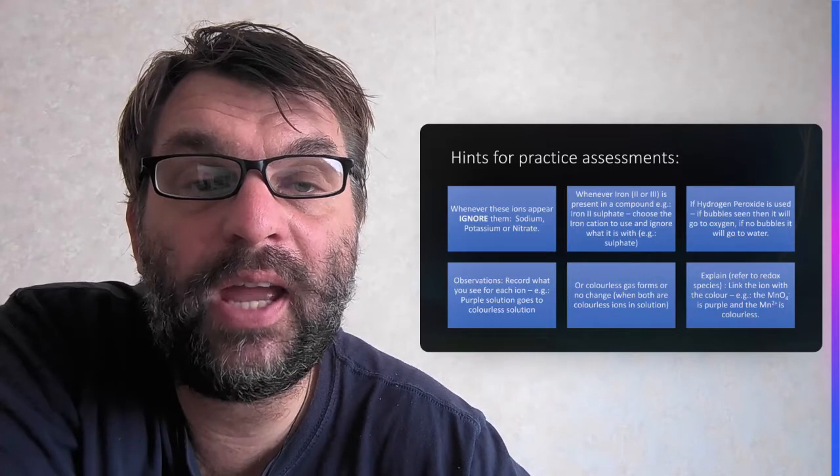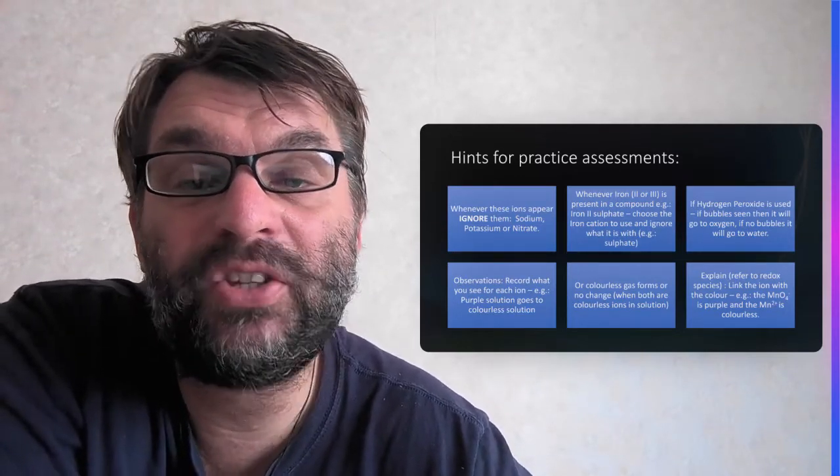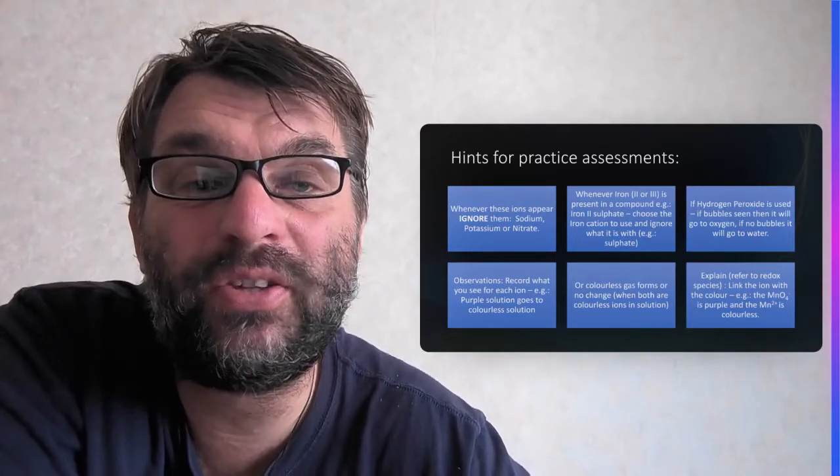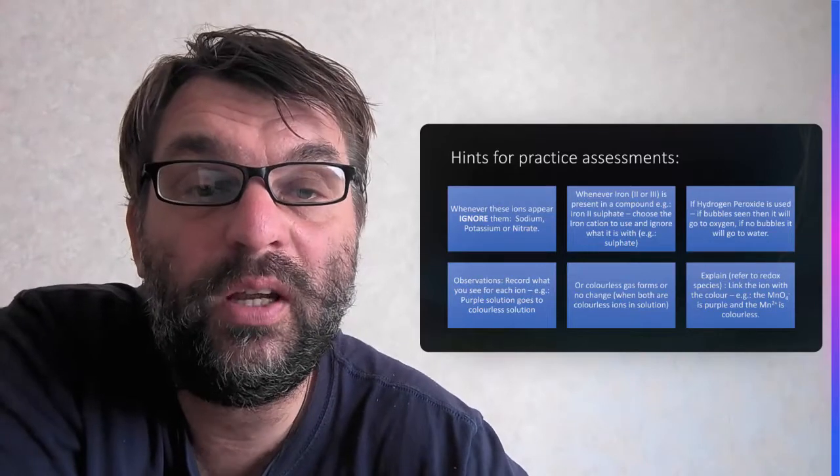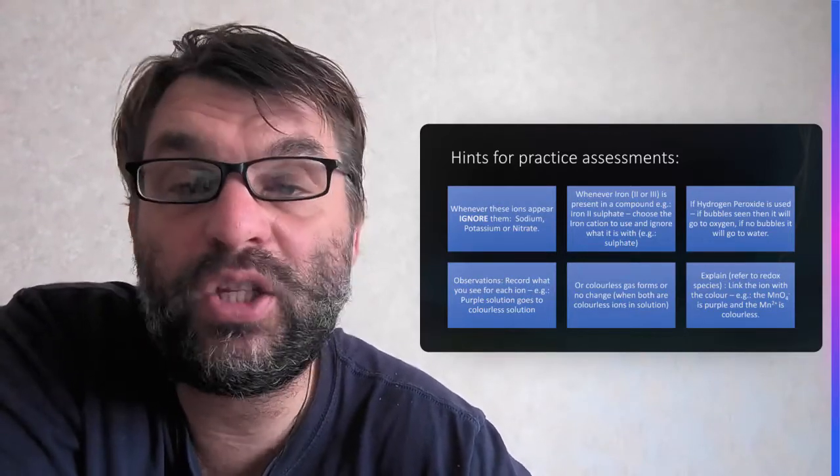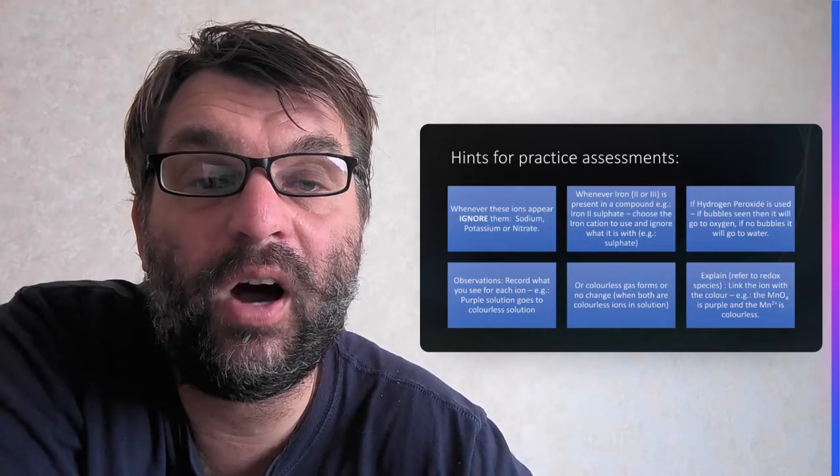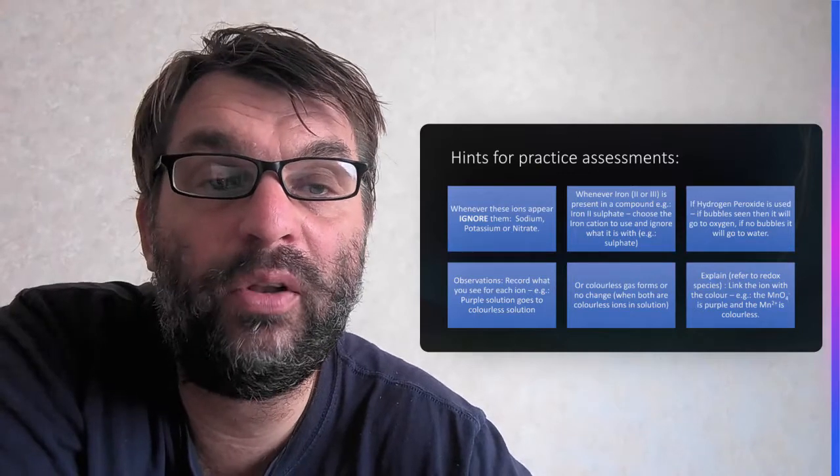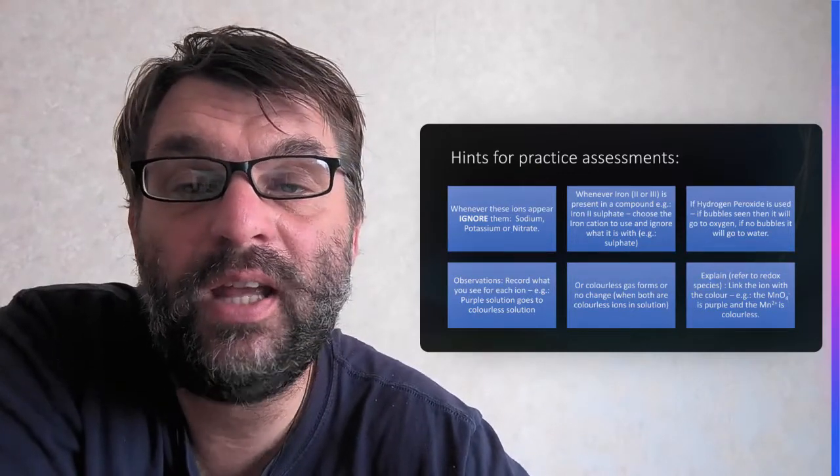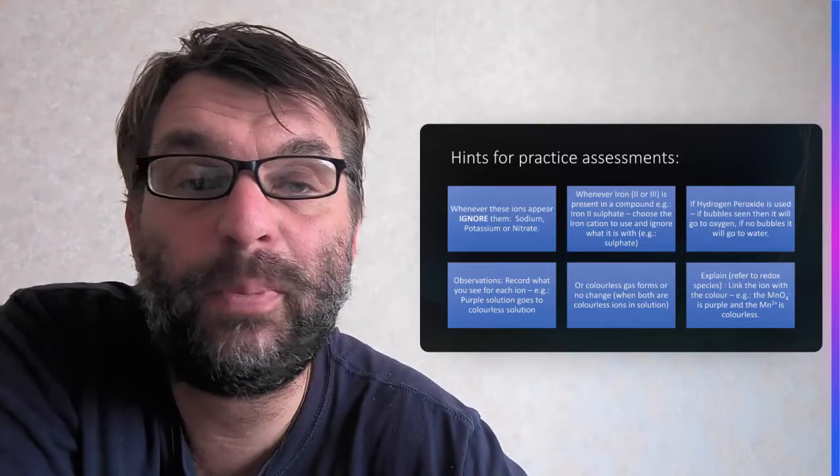If you've got a species, a salt like iron sulfate, then it's the species iron 2+ that is being oxidized or reduced, or iron 3+, not the entire species of iron 2 sulfate. You're going to be careful that you're choosing the iron cation as your species and not the associated spectator ion. It's not the whole thing that gets oxidized or reduced, it's the iron 2+ or 3+ species.